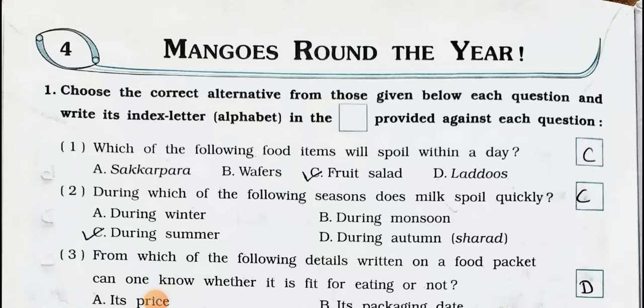Hello students, hope you all are fine. Today we'll see Standard 5th Looking Around Environmental Studies workbook. We'll see our new chapter, Chapter Number 4: Mangoes Round the Year.